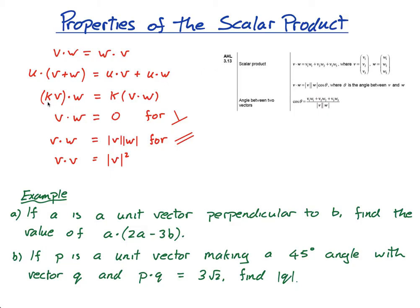In this case, k is a scalar. So a scalar times a vector, dotted with another vector, is equal to the scalar times the dot product of the two vectors. We've come across this one before.